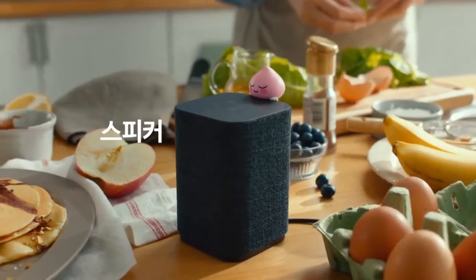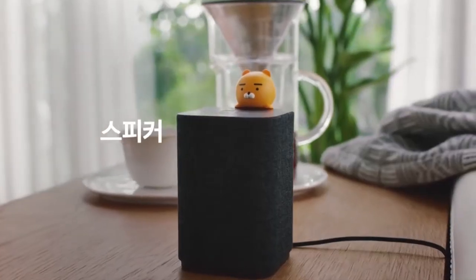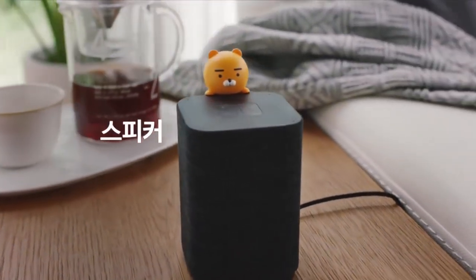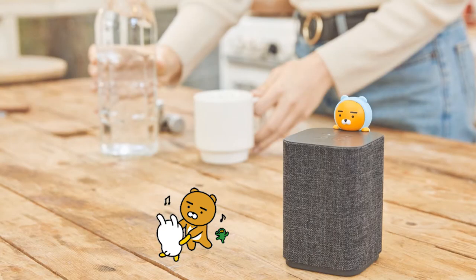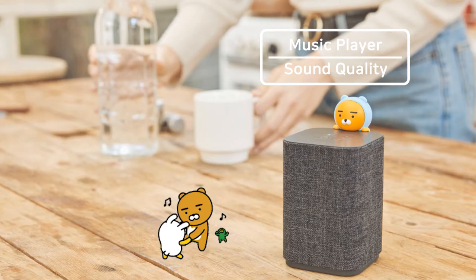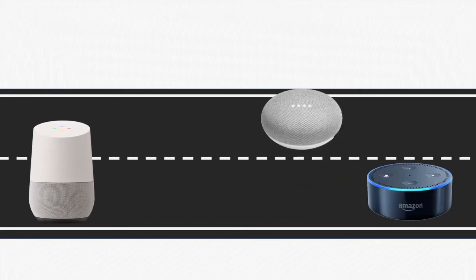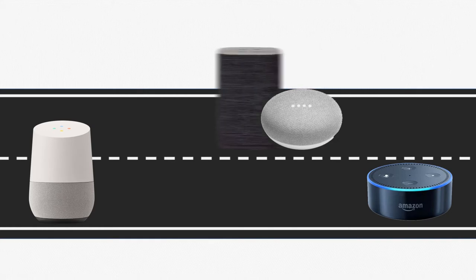Kakao Mini can blend with any place in your home. The simple design looks natural in the kitchen, classy on the table, and cosy looking in the bedroom, so literally everywhere in your home. Although it is an assistant speaker, it will be mostly used as a music player, which indicates that sound quality is very important. From a personal point of view, the sound quality of Kakao Mini is much better than the second generation of Amazon Echo Dot or Google Mini, but I'm sure the Google Home or Apple HomePod has much better sound quality than Kakao Mini.